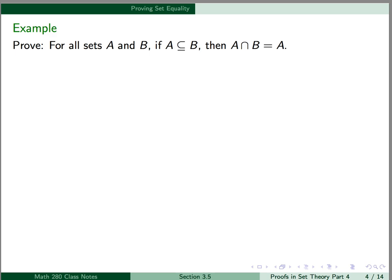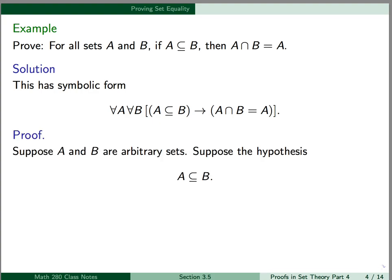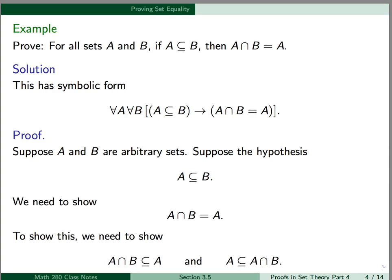As an example, we want to prove: for all sets A and B, if A is a subset of B, then A intersect B is equal to A. We first write out the symbolic form: for all A, for all B, A is a subset of B implies A intersect B is equal to A. We can start the proof using a proof by arbitrary element — suppose A and B are arbitrary sets, suppose the hypothesis A is a subset of B, and we need to show the conclusion A intersect B is equal to A.